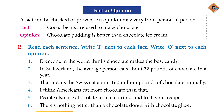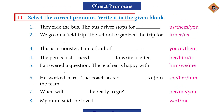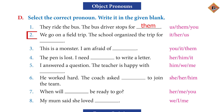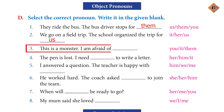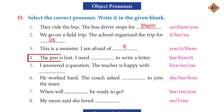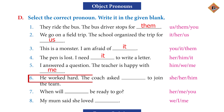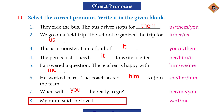Let's move to page 107. Here we discuss object pronouns — pronouns which are used for the object. Question D: Select the correct pronoun and write it in the given blank. First: They ride the bus. The bus driver stops for them. Second: We go on a field trip. The school organized the trip for us. Third: This is a monster. I'm afraid of it. Fourth: The pen is lost. I need it to write a letter.